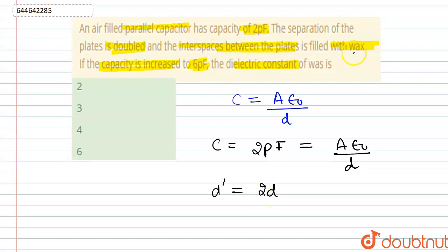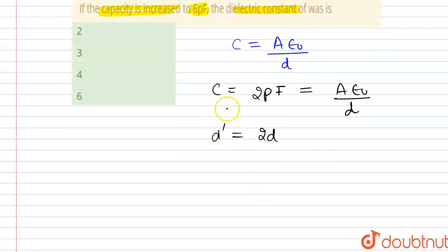C' = k A ε₀ / 2d, where k is the dielectric constant. The value of C' equals 6 picofarads.